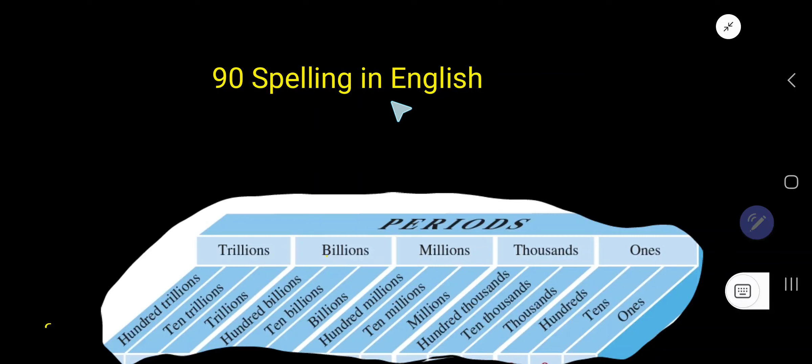Ninety, number spelling in English. This number is called 90. Look, 9 plus T equals 90.